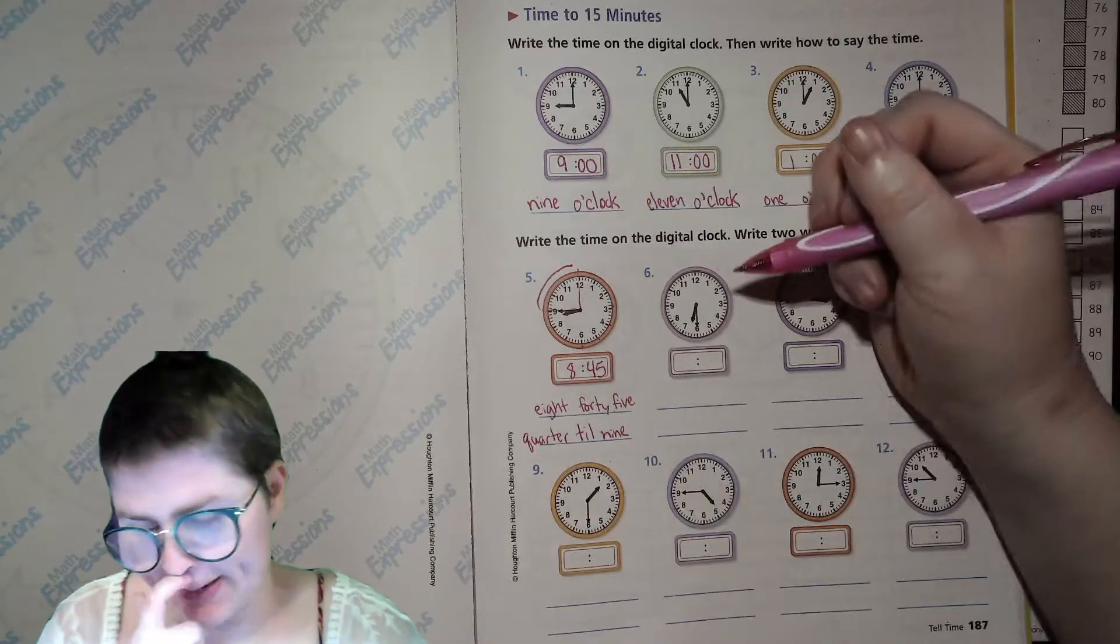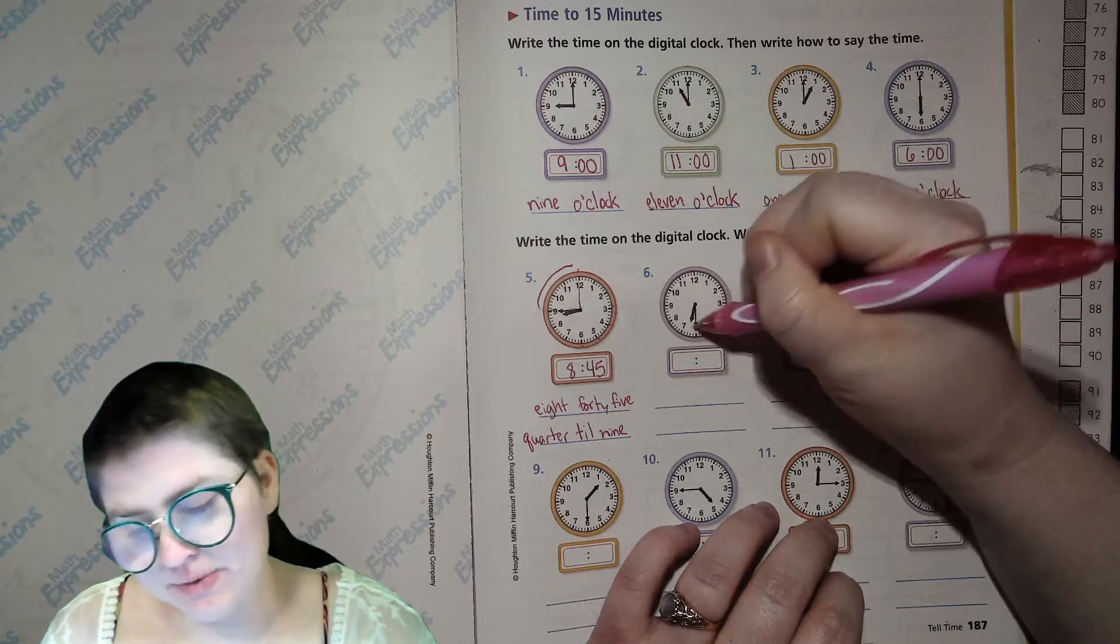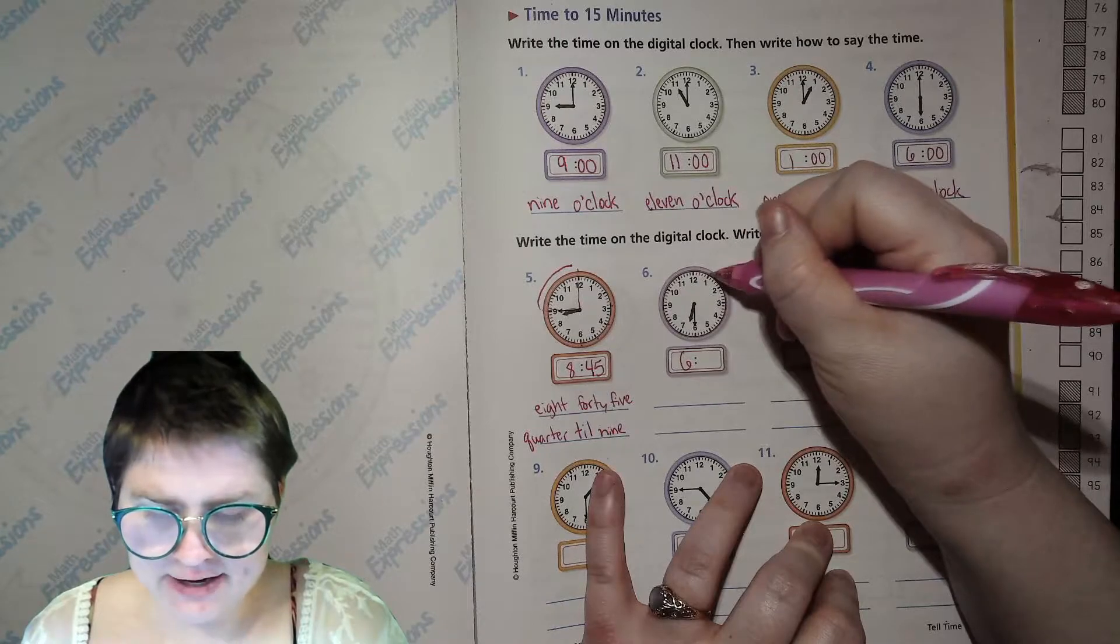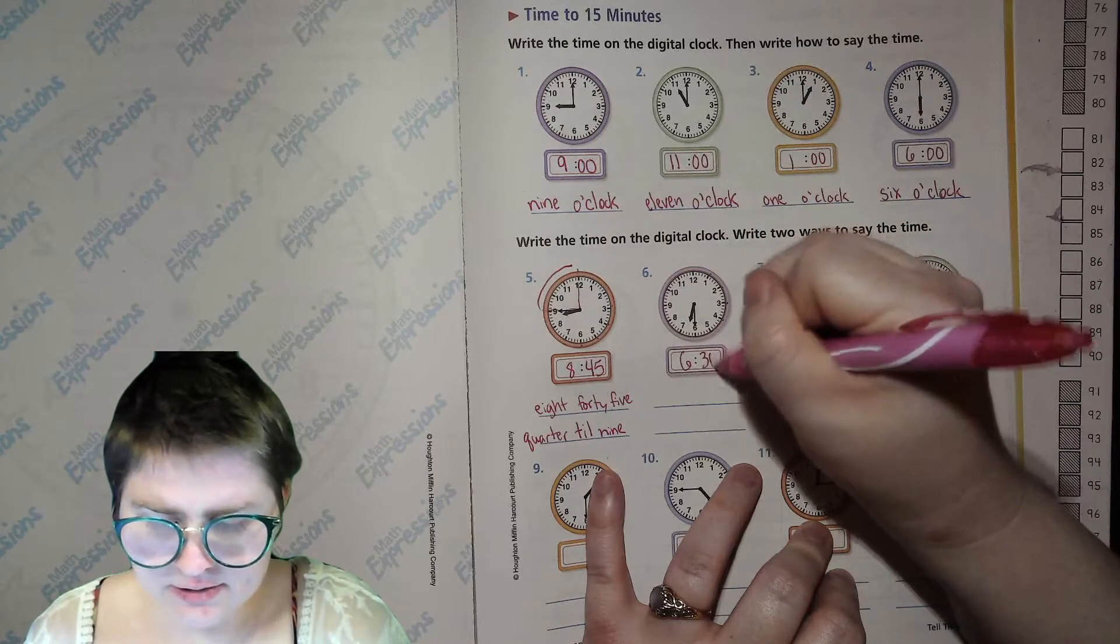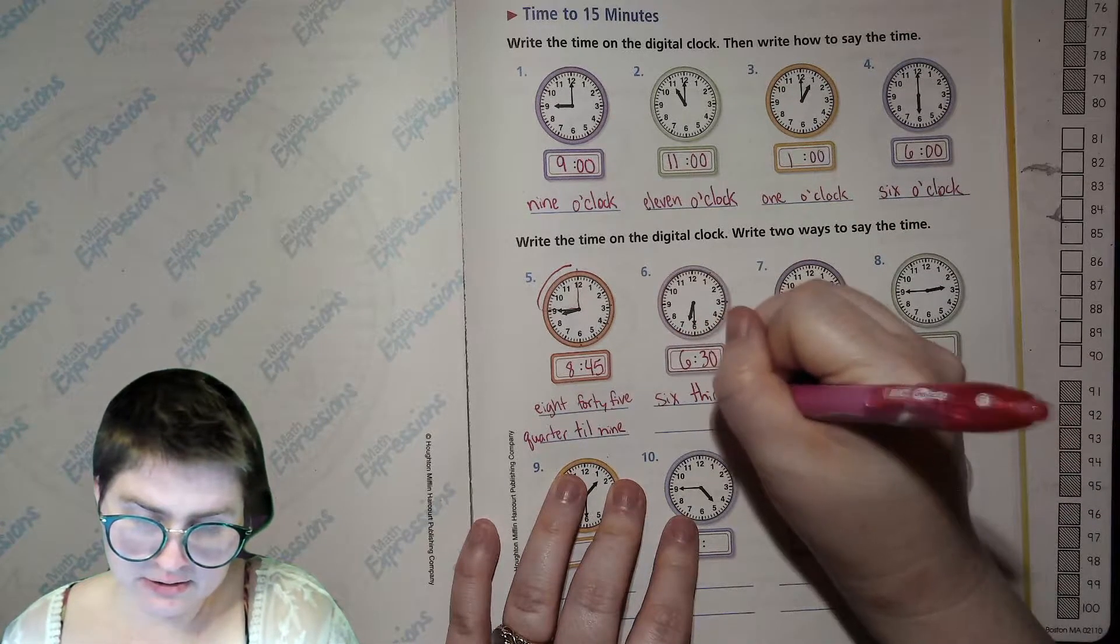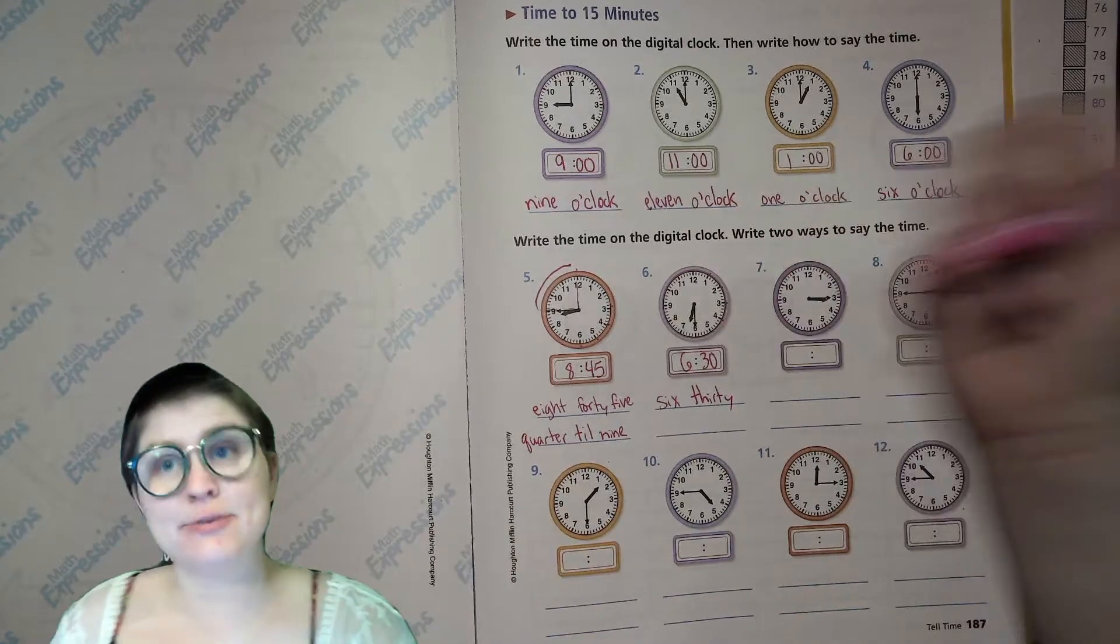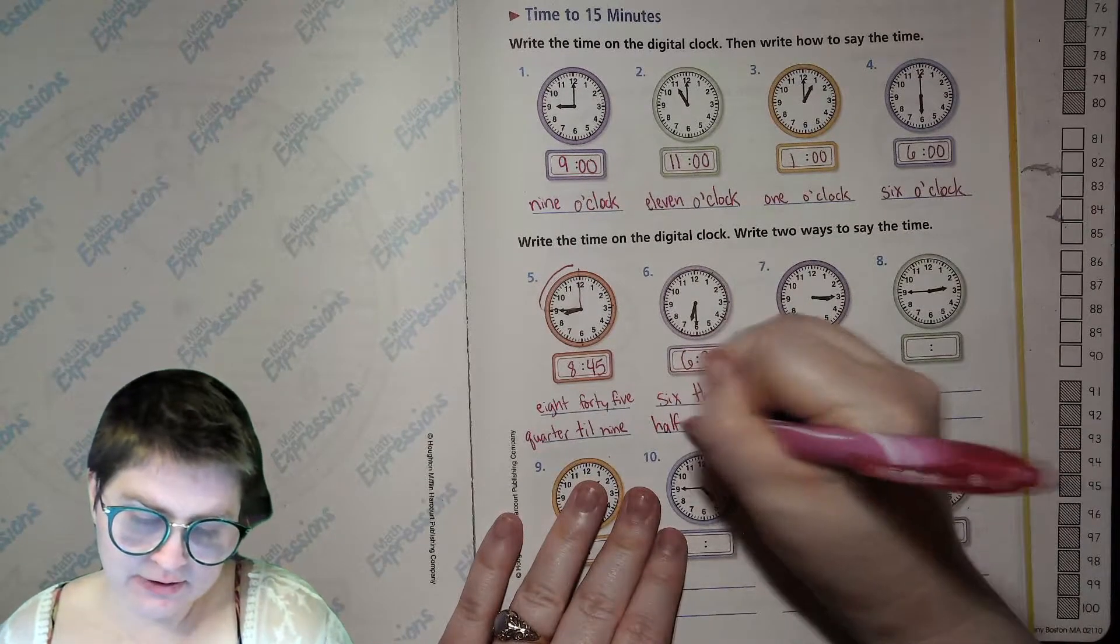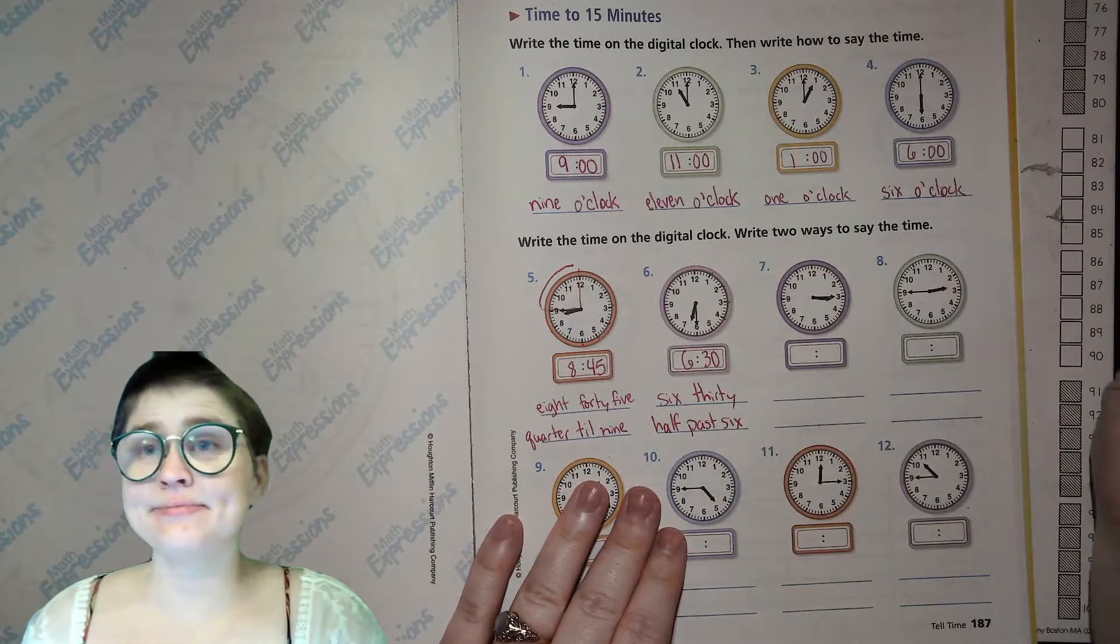Next one. Our hour hand is not at the 7 yet. It's almost there, but it's still 6. 6. And our minute hand, let's count by fives. 5, 10, 15, 20, 25, 30. So you could say 6, 30. You could also say, because half of the hour has passed since it was 6 o'clock, you can say half past 6.